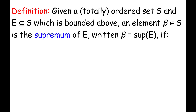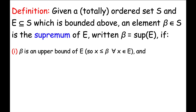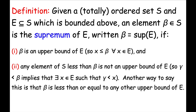Given a totally ordered set S, such as the real numbers, and a subset E which is bounded above, an element beta in S is the supremum of E — written beta equals sup of E — if: number one, beta is an upper bound of E, so every x in E is less than or equal to beta; and number two, any element of S that is strictly less than beta is not an upper bound of E. In other words, beta is less than or equal to any other upper bound of E. It is the least upper bound of E.